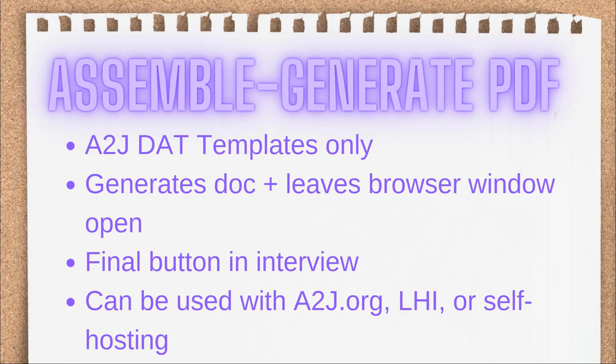Assemble generate PDF is the first of the exiting options intended only for use with the A to J document assembly tool — the A to J DAT. It is not to be used with HotDocs templates. It generates a PDF for the end user but leaves the A to J viewer screen open, so the user will have to close their browser manually. It also doesn't send the user's answers onto a server. This should be used when the author only wants the user to get their document and nothing else — no saving of answer files. Generally this is used for short, one-and-done interviews, or in self-hosting instances when the server doesn't have the ability to store answer files.